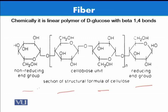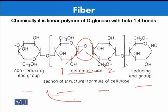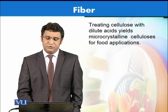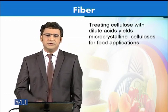If you look at the structure of cellulose, it consists of D-glucose. It is a polymer of D-glucose, and these are linked together with a linkage called the 1-4 bond. When two D-glucose units are joined together with this bond, this is called the cellobiose unit, which is basically the structural component of cellulose.